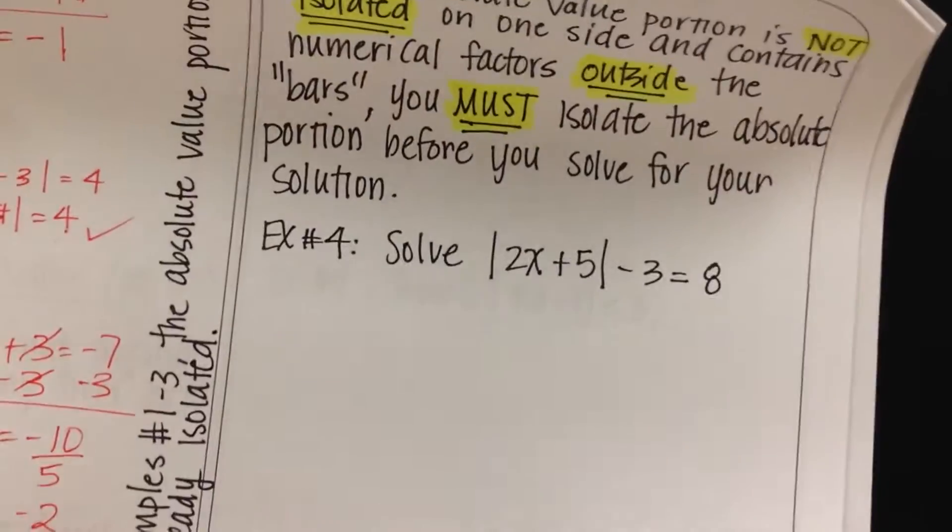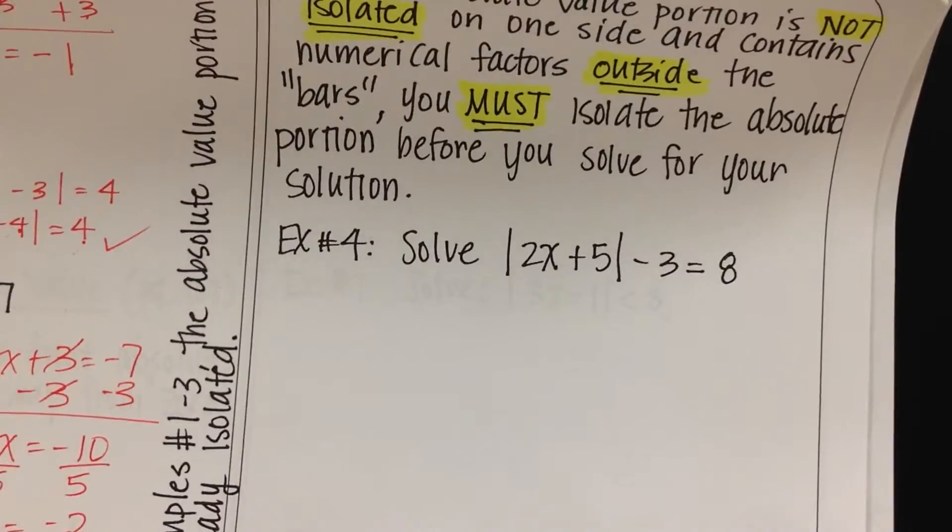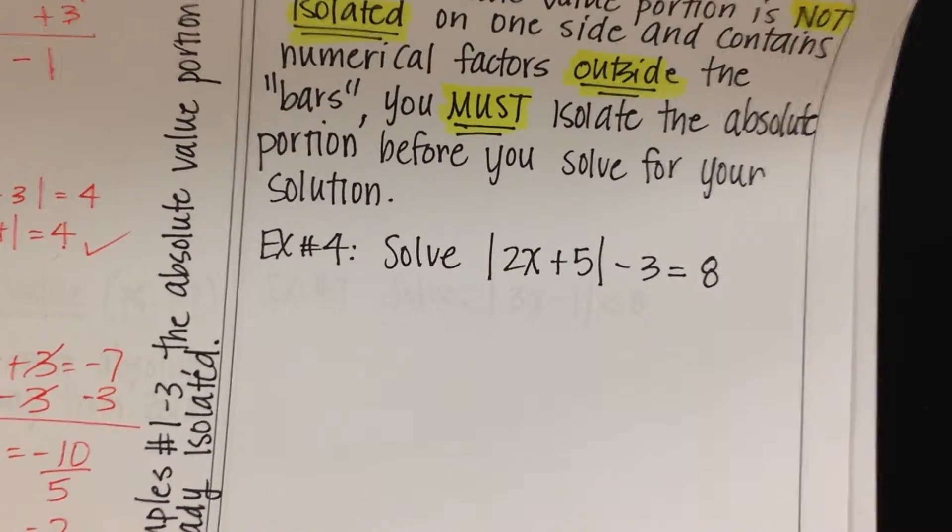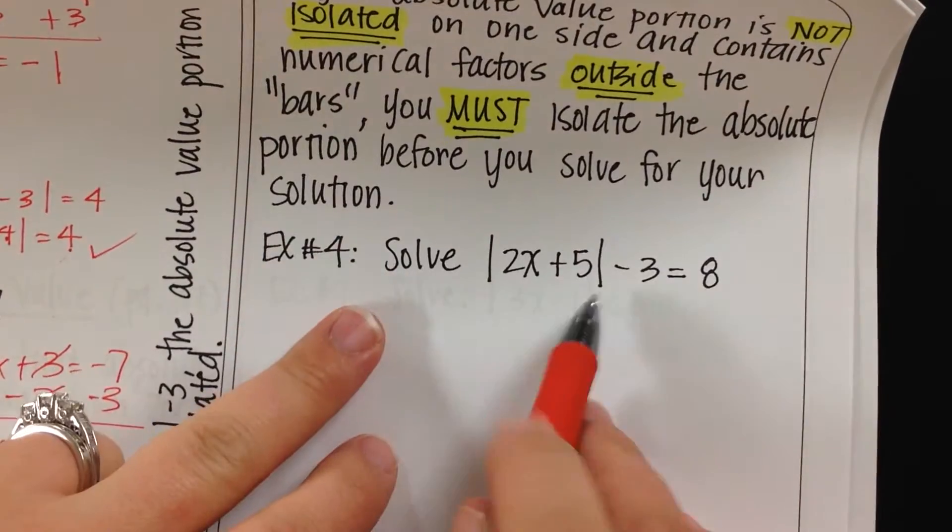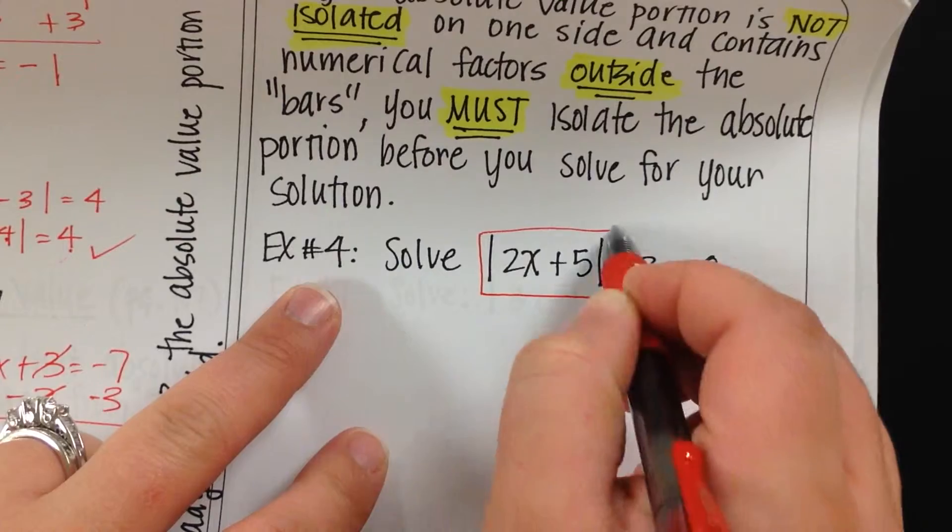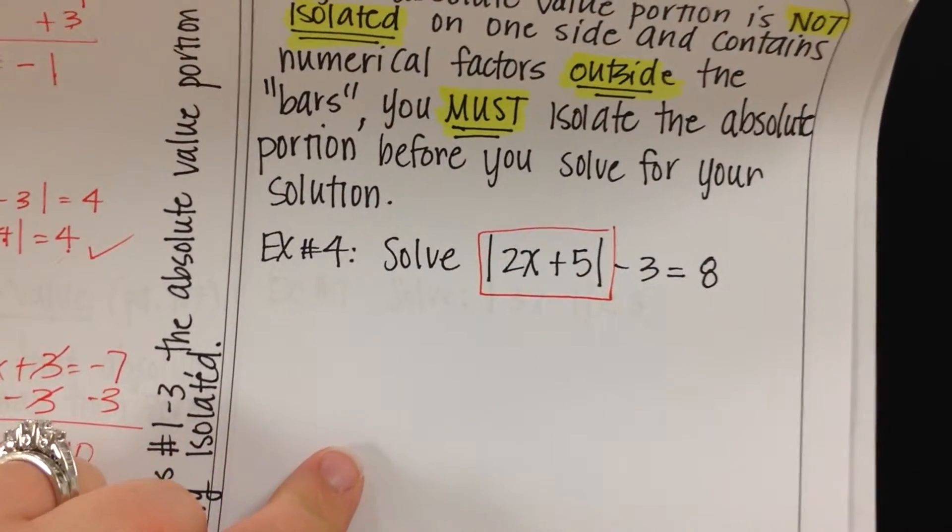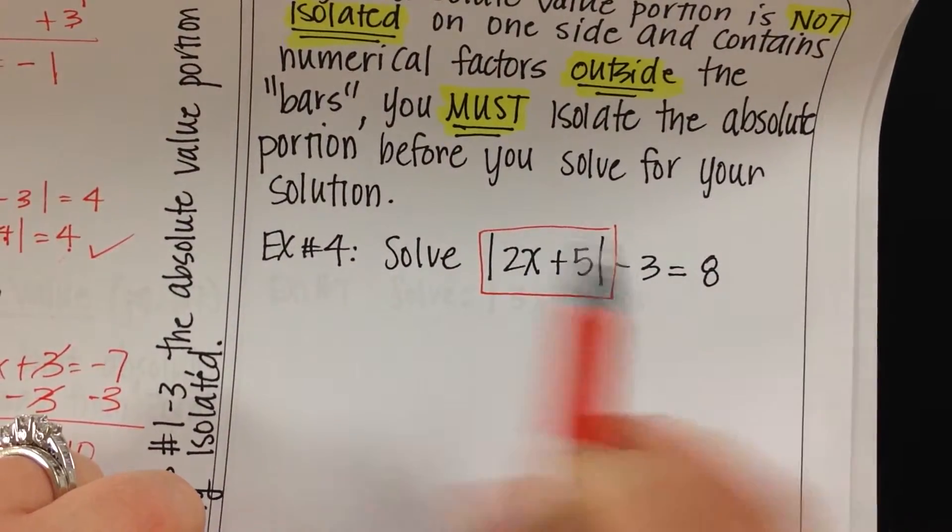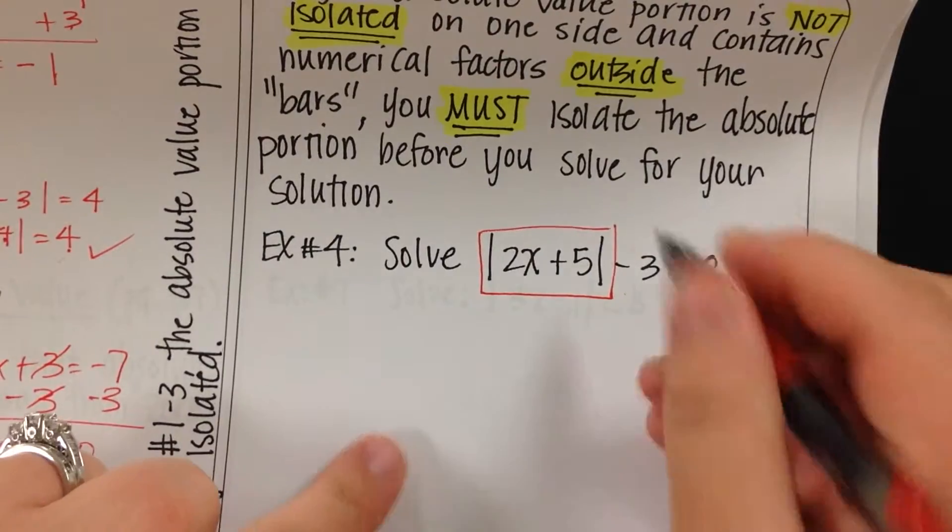Let's look at example 4. Principally, we're going to be doing the same thing once we isolate our absolute value bars. If I want to get this portion by itself, how do I get rid of the negative 3 that's on the left side? You add it.